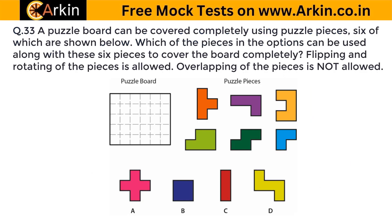A puzzle board can be covered completely using puzzle pieces, six of which are shown below. Which of the pieces in the options can be used along with these six pieces to cover the board completely? Flipping and rotating of pieces is allowed; overlapping is not allowed. The question says we have to cover the complete puzzle board with seven pieces — six pieces are from here and the seventh one you have to choose from the options. So the question is: which piece can be used here?